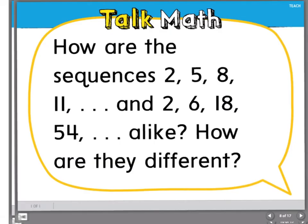This is our summarizing question. I want you to explain, in complete sentences, how are the sequences 2, 5, 8, 11 and 2, 6, 18, 54 alike and how are they different? You will need at least two complete sentences to answer this question. Go ahead and press pause at this time if you need to write this down or some more time to answer the question.